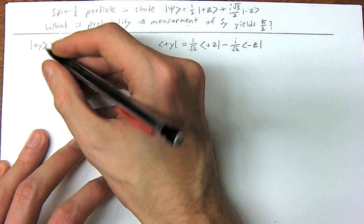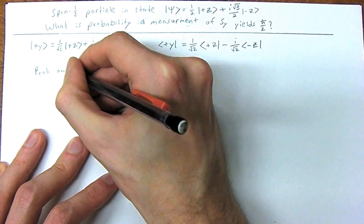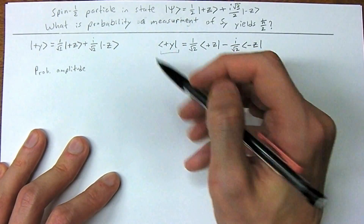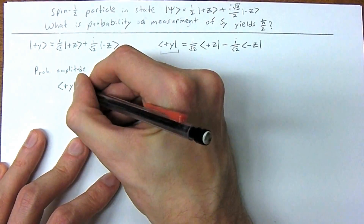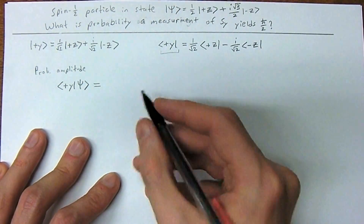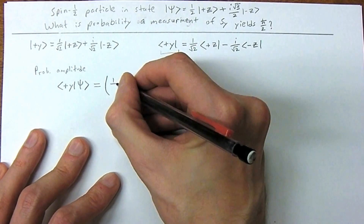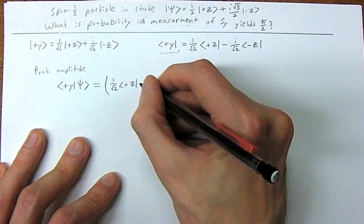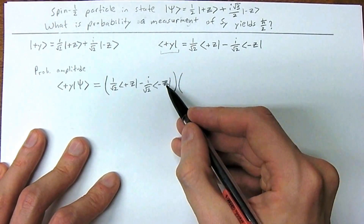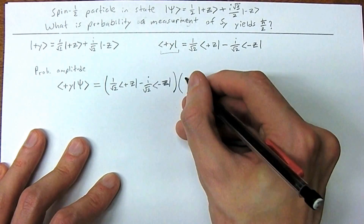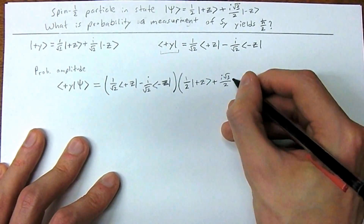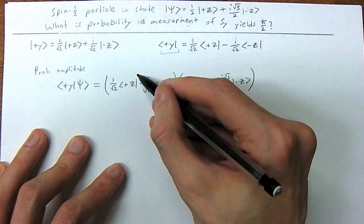Now we need to find the probability amplitude. We're going to act this bra on |ψ⟩, so we have ⟨+y|ψ⟩. For every ket there is a corresponding bra, and we're going to find this probability amplitude. This equals the bra ⟨+y| — that is (1/√2)⟨+z| − (i/√2)⟨−z| — multiplied by |ψ⟩. Now we have ψ in terms of z already, so we plug in (1/2)|+z⟩ + (i√3/2)|−z⟩.